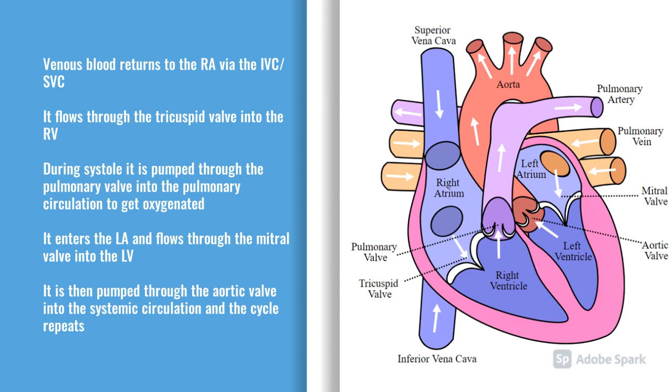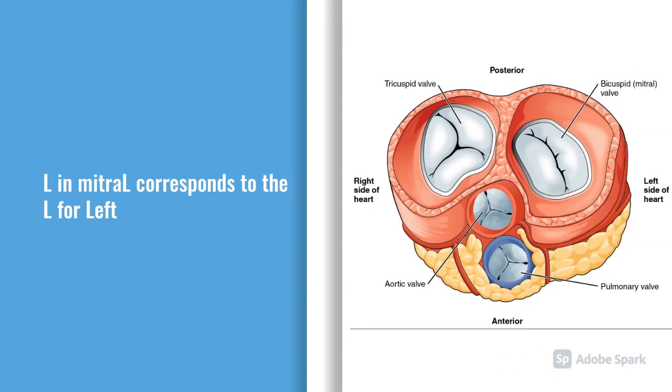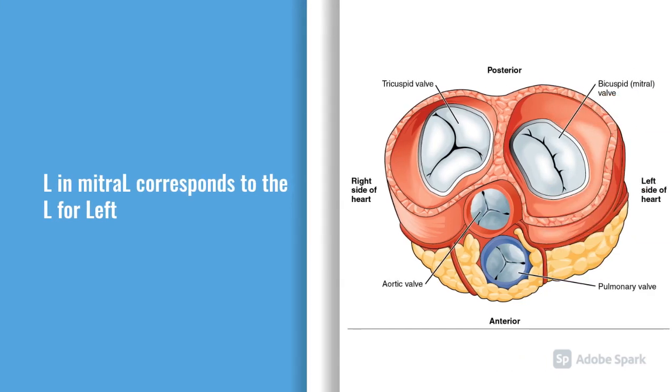A way to remember which side the valves are on: there's an L in mitral, so the L in mitral corresponds to left. And there's an R in tricuspid, and the R corresponds to right.